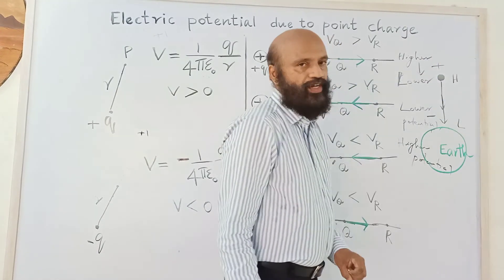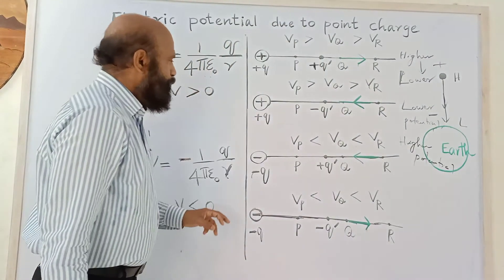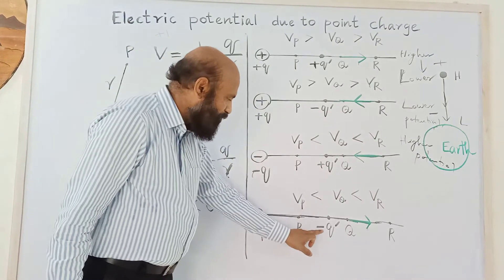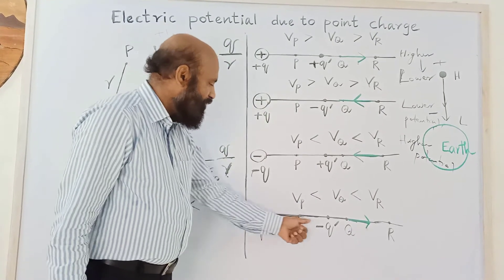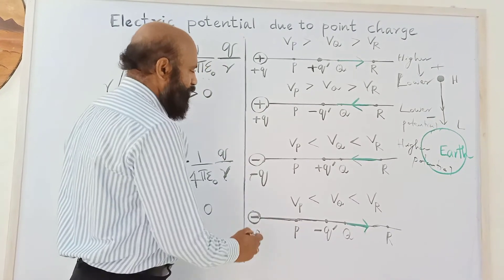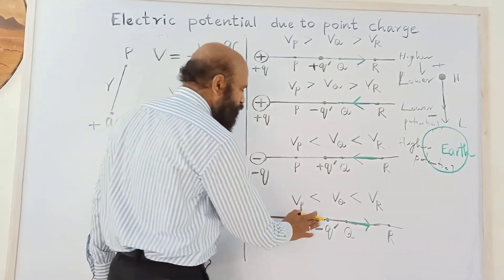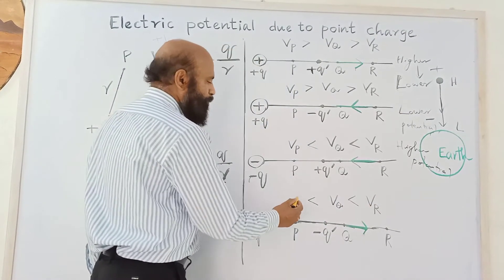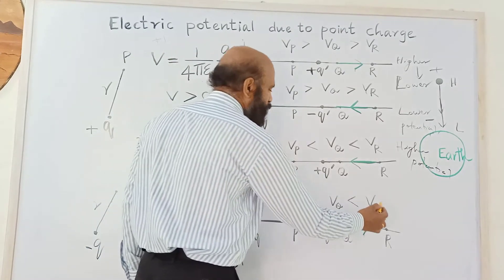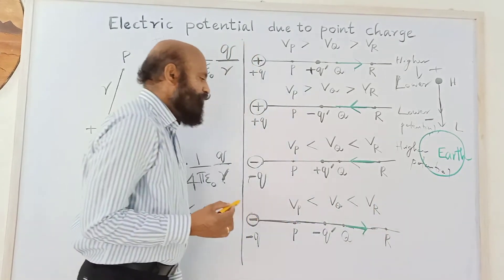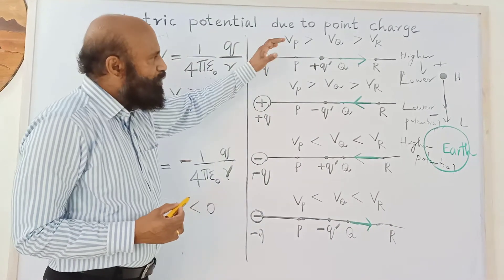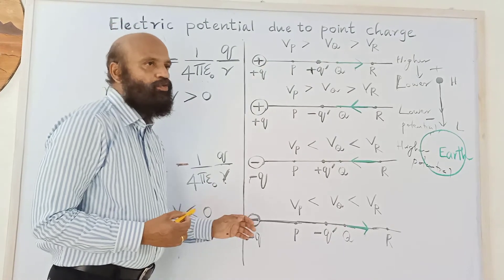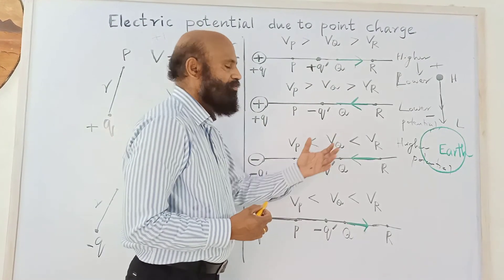So a positive charge always moves from higher potential to lower potential, just like a body in a gravitational field. For a negative test charge near a negative source charge, there is repulsion, so it moves away — from lower potential to higher potential. In summary: a positive charge moves from higher to lower potential; a negative charge moves from lower to higher potential.